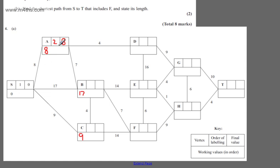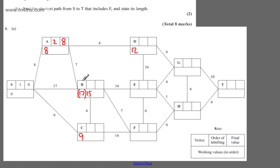We now consider all of the unconnected vertices we can reach directly from A. We already know the ones we can reach from S, so we could go to D from A or we could go to B. I'm already up to 8. 8 plus 4 gives me a working value of 12. 8 plus 7 is 15, therefore it betters the 17, and I can write 15. This 15 means that the shortest path from S to B is now 15 miles, and it's via A rather than directly from S to B.